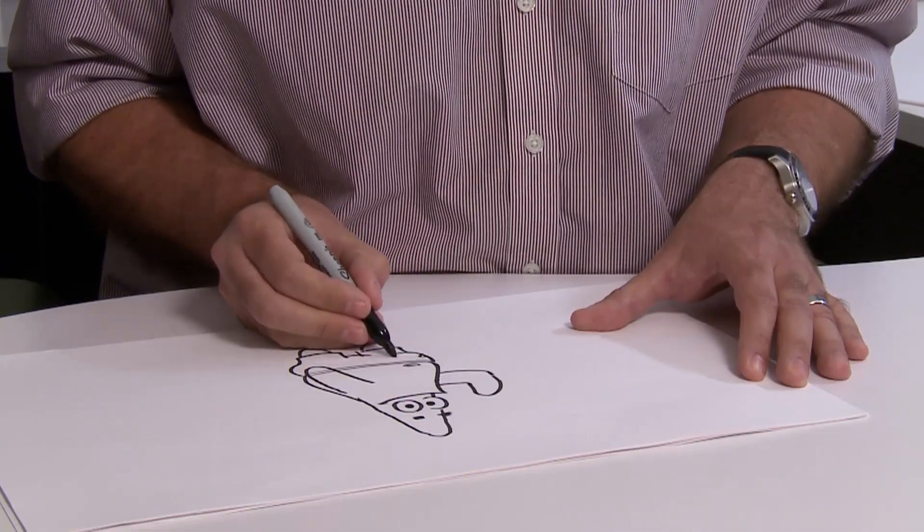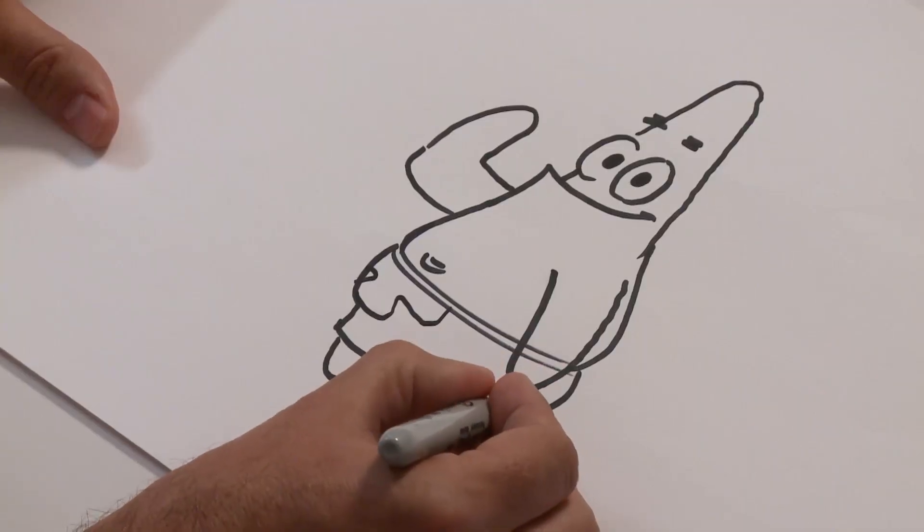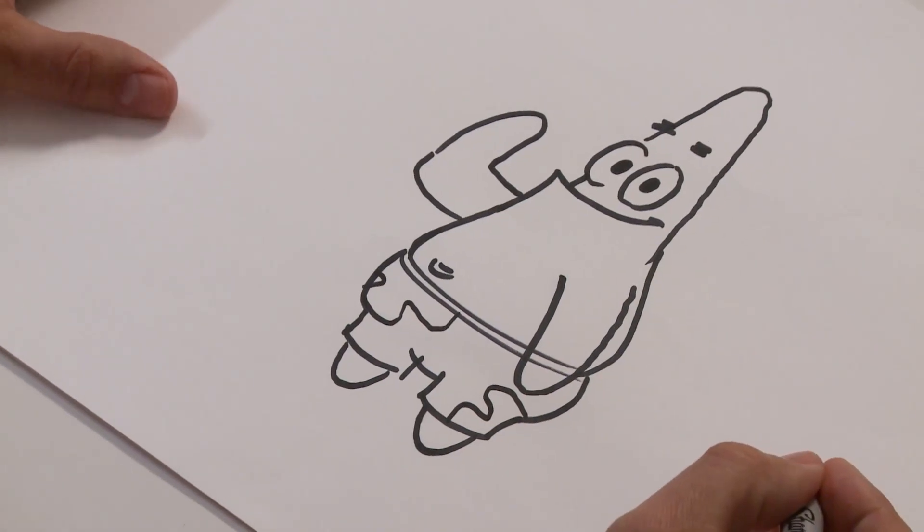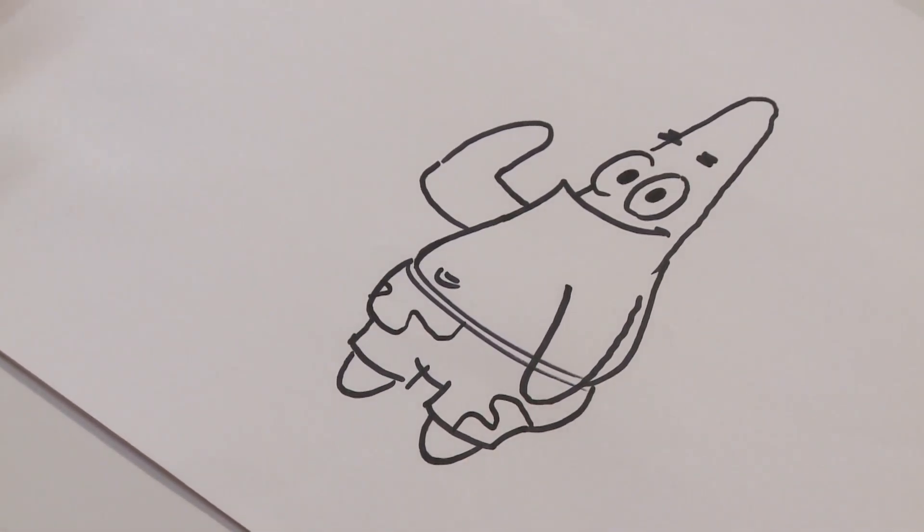He's got one flower underneath his belly button. Another one on the side of his leg. Look at that. And that is how you draw Patrick. Amazing!